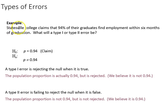So going back to our example, Statesville College claiming 94% of graduates find employment within six months. If we make a mistaken hypothesis test, what would it be? A type one error means rejecting the null when it's true. So if the proportion is actually 0.94 but it's rejected, that's a type one error. Then the alternative type of error, failing to reject the null when it's false, so the population proportion is not 0.94 but somehow we reject it.